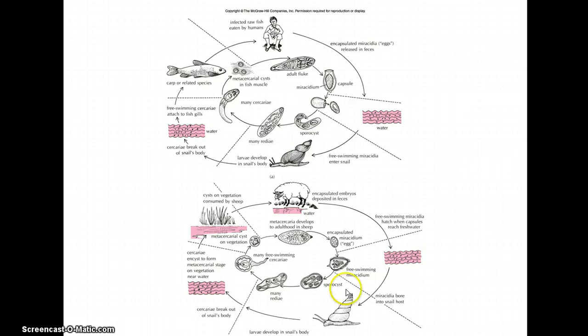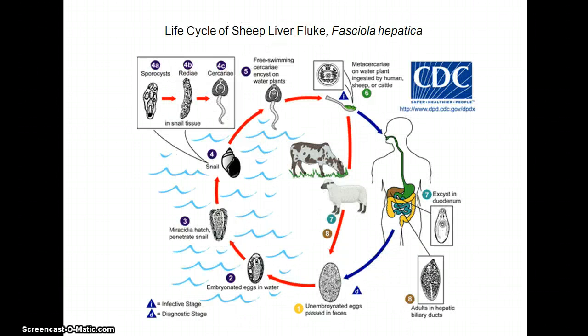Go ahead and take a look at them, look at the different stages. Notice that some of the stages are different in different cycles, different hosts, the difference between the cercaria and the metacercarial cyst when you're looking at that in lab so it doesn't get confusing. And on the next slide here is just the CDC, Center for Disease Control's version of the sheep liver fluke, just to give you an alternate presentation of it.